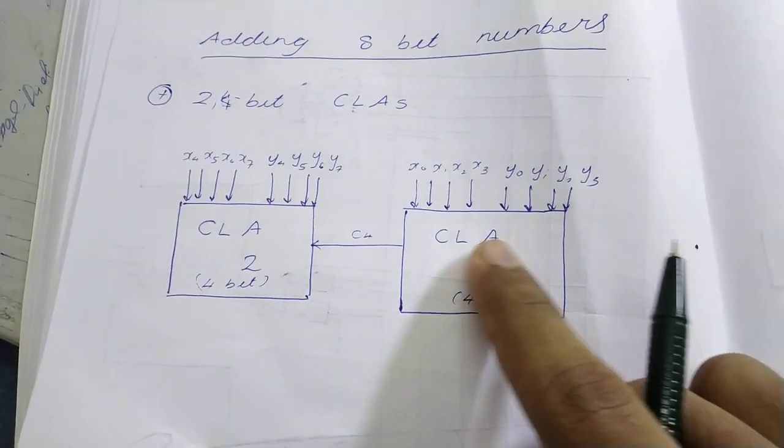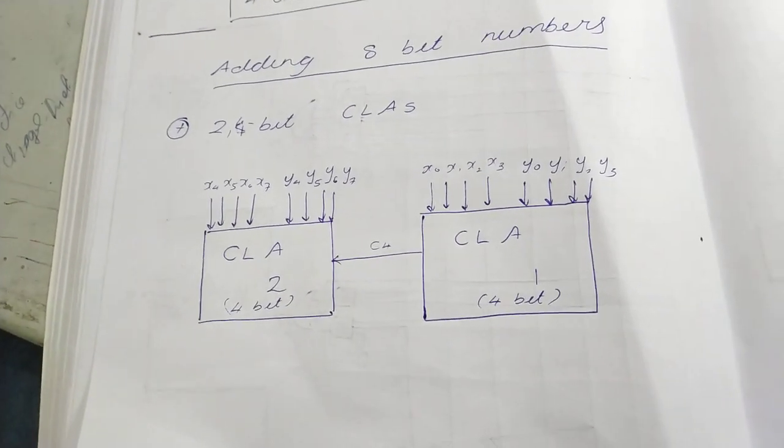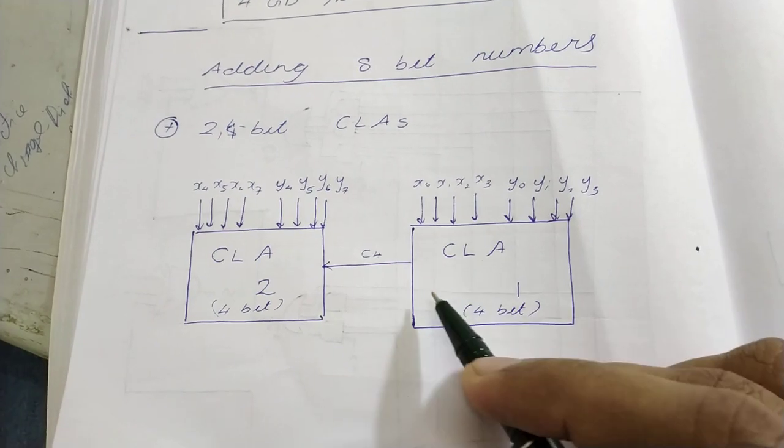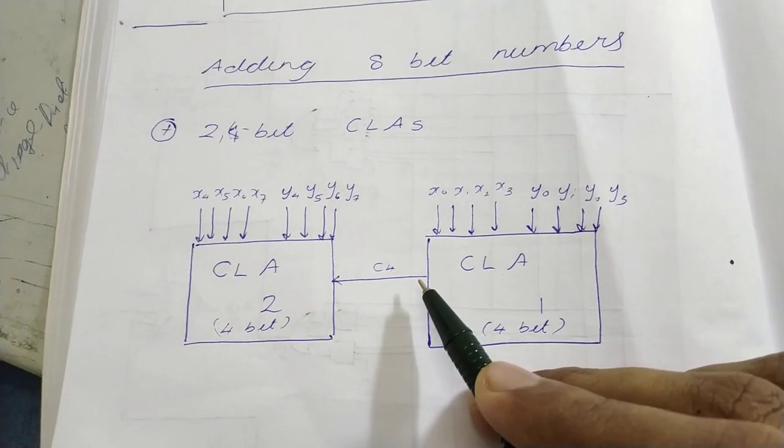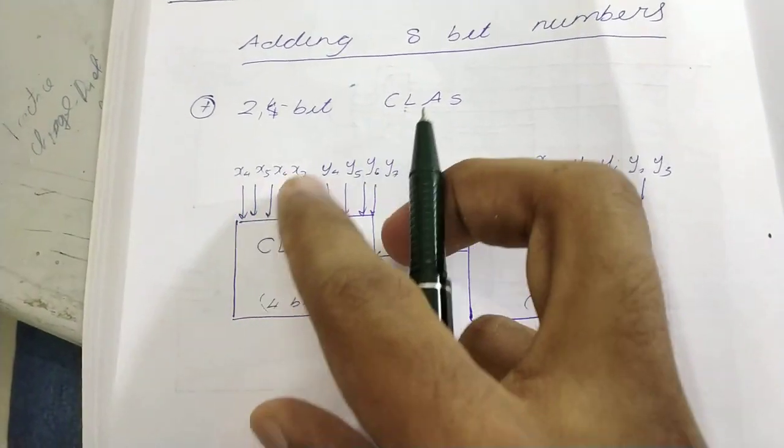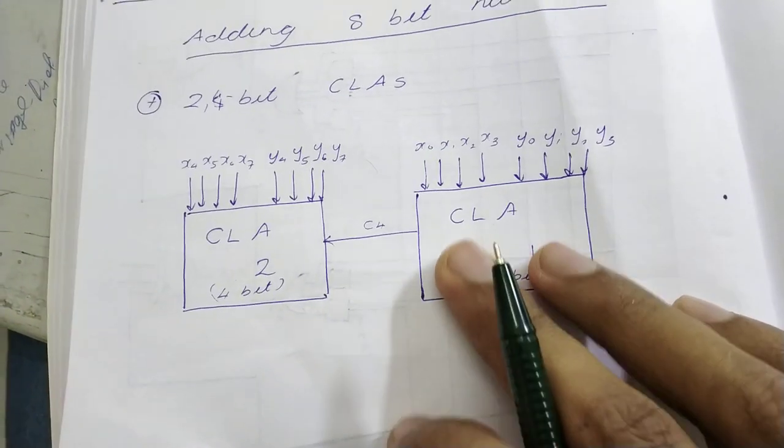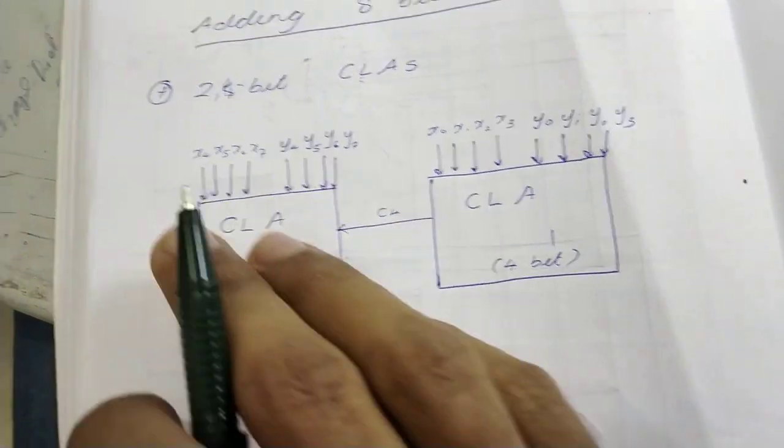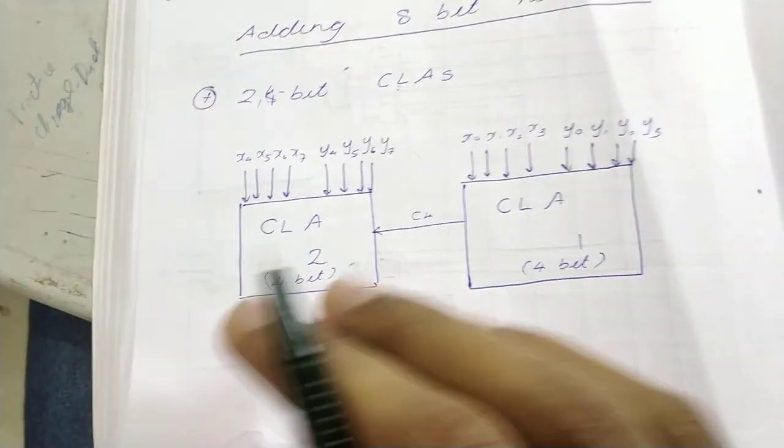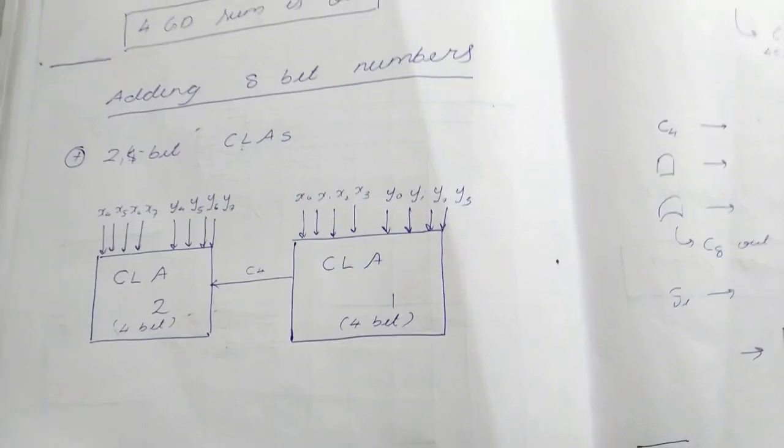So this is one 4-bit CLA, CLA1. This is another 4-bit CLA called CLA2. So what happens is once this C4 is coming out of the CLA1 it ripples over to the second CLA and the second CLA does this sum. It adds these two numbers and gives its sum. So the sum from this CLA and the sum from this CLA together we will get the final sum. So let's see how it is done.